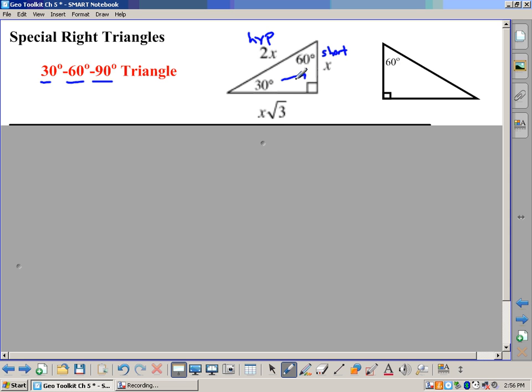And whatever is opposite the 60, we call that the medium side here, and it's the longer of the two legs, that is going to be whatever the short side is times the square root of 3. And class, we'll work out why that is, but that's what happens every time you have a 30-60-90.